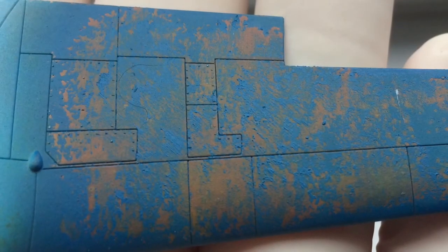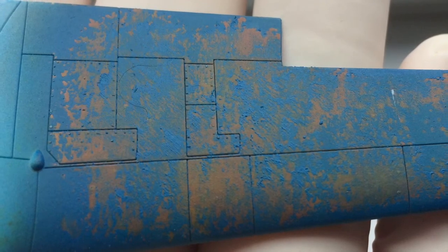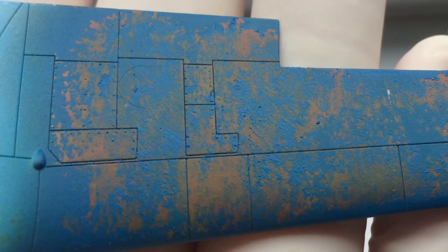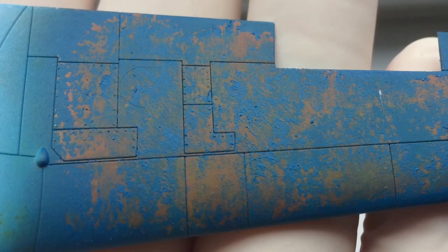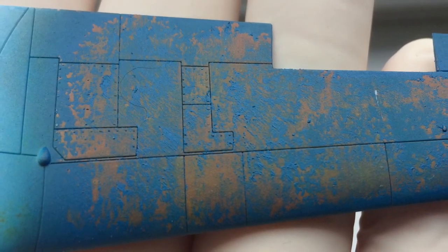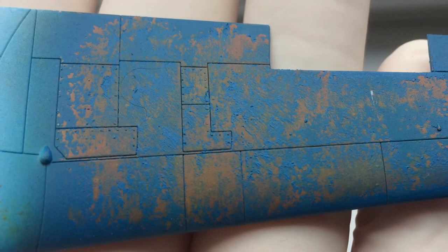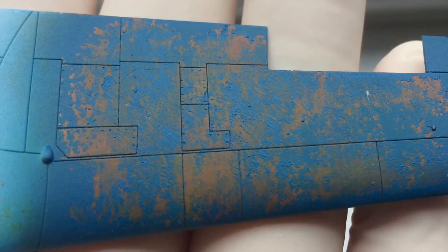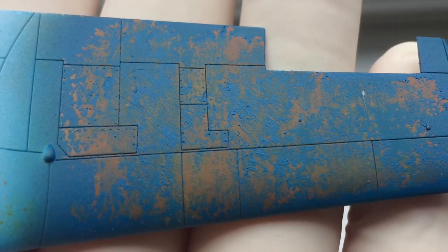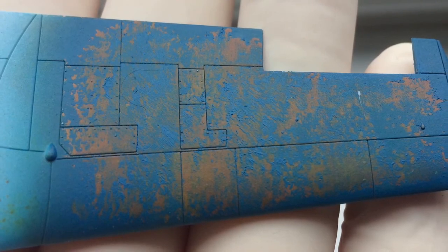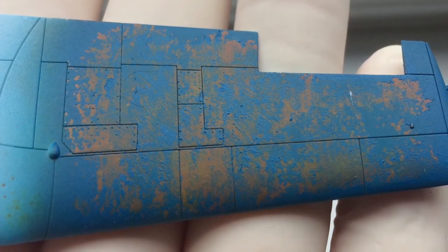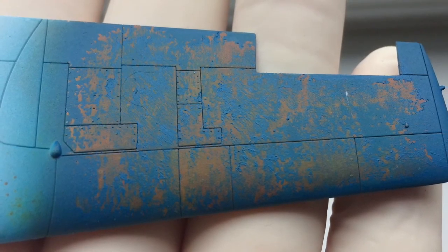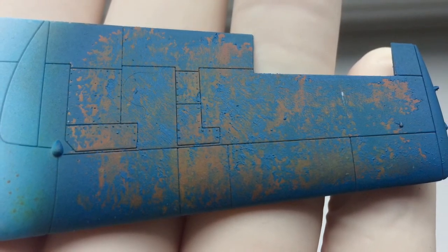So I'm actually really pleased with how this has turned out. It's given some really nice effects on here. As you can see it's blistered some of the paint so it looks like the paint hasn't come off but the rust is pushing up off the surface. And the areas where the chipping medium has removed the paint is random. It doesn't look too uniform and looks generally quite realistic. So yeah I'm really pleased how this has gone.